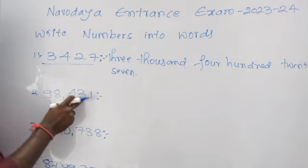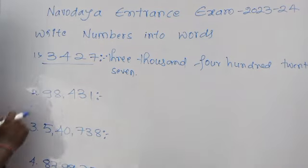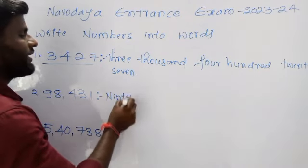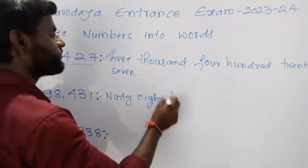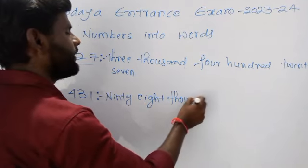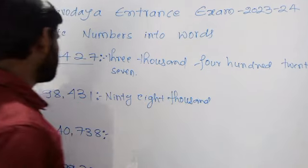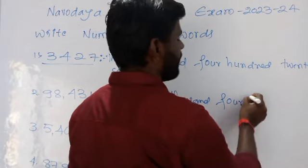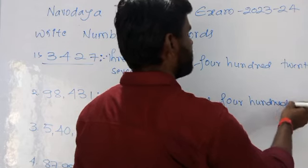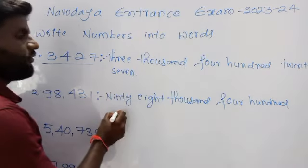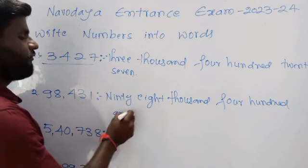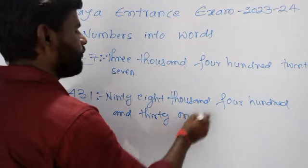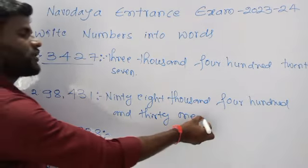Next, unit, 10, 100, 1000, 10,000. Ninety-eight thousand, four hundred thirty-one. Full stop.